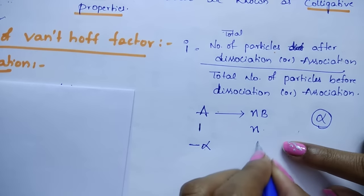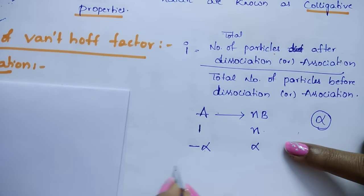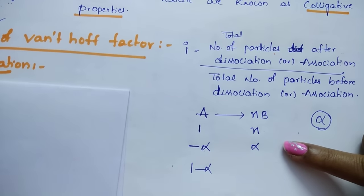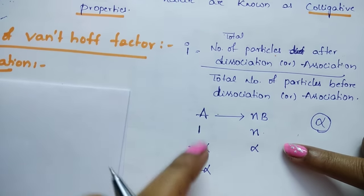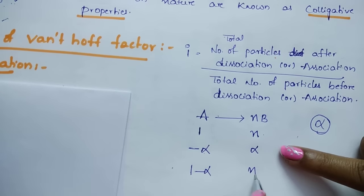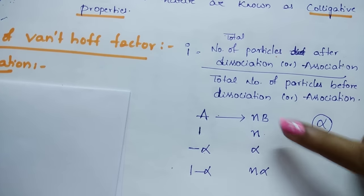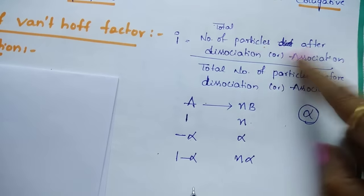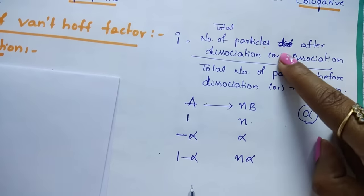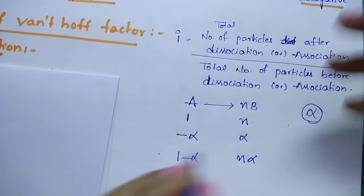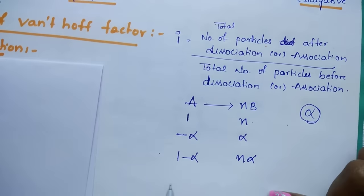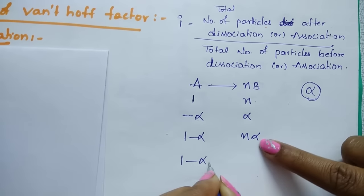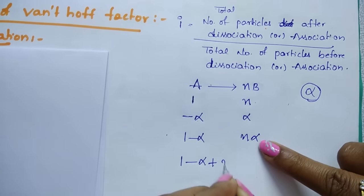At equilibrium, moles of A is 1 minus alpha, and N×alpha moles of B are formed. So the total number of moles after dissociation is (1 minus alpha) plus N×alpha.